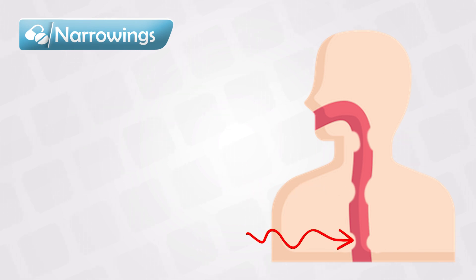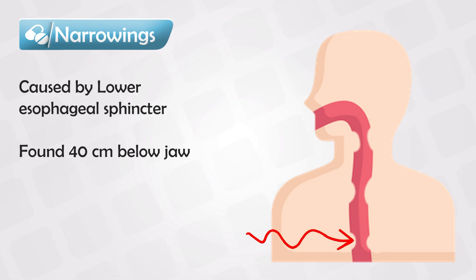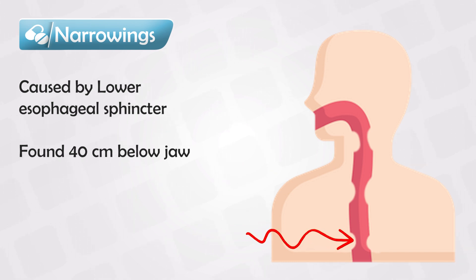And finally, the third is the lower esophageal sphincter, and this is about 40 centimeters below. So, during the exam, if the object was stuck, let's say 25 centimeters below the jaw, this will most likely be caused by the aortic arch, and so on.